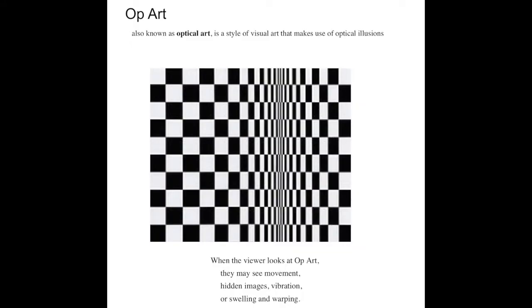Op art, also known as optical art, is a style of visual art that makes use of optical illusions. When the viewer looks at op art they may see movement, hidden objects, vibration, or swelling and warping.